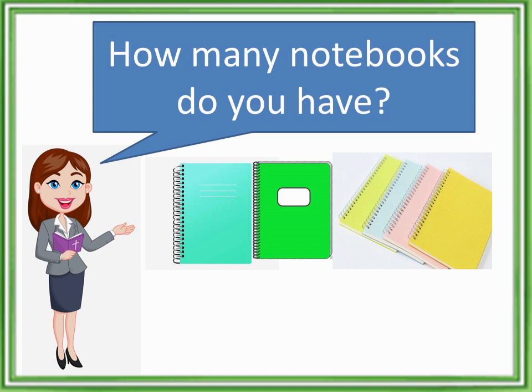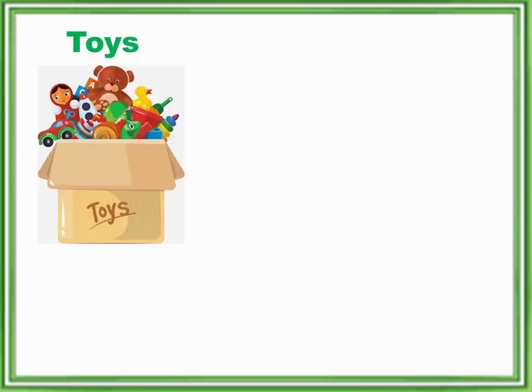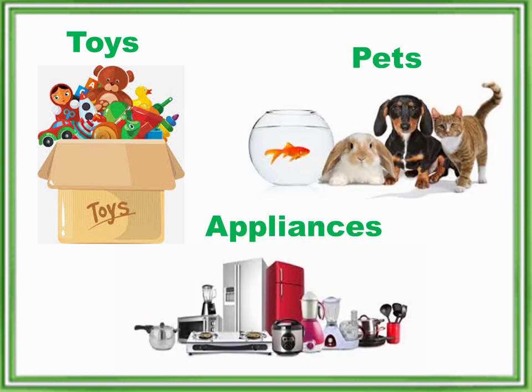Many things around us exist in the form of sets. For example, in your house, there are sets of toys, pets, and appliances, and so on. The number of elements in these sets can easily be counted. But do all sets have elements that can be counted?